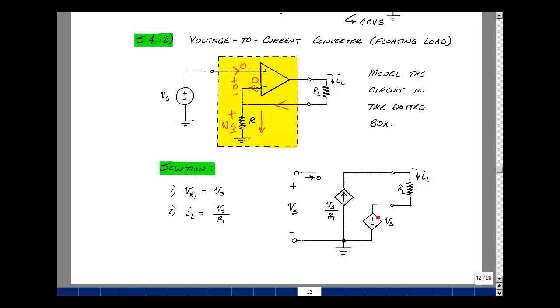So let's use a voltage-controlled voltage source with a gain of one. So it forces this node at the same potential this is.